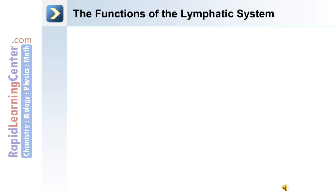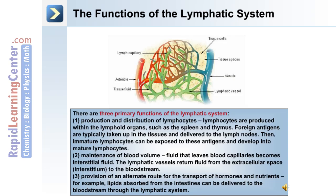There are three primary functions of the lymphatic system. The first is the production and distribution of lymphocytes. Lymphocytes are produced within the lymphoid organs, such as the spleen and thymus. Foreign antigens are typically taken up in the tissues and delivered to the lymph nodes, where immature lymphocytes can be exposed to these antigens and develop into mature, functional lymphocytes.